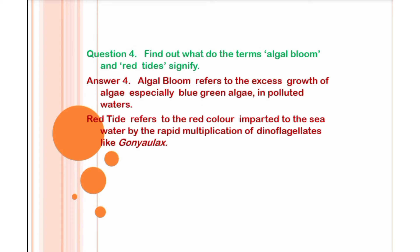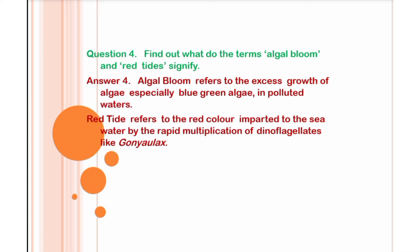Next question: what do the terms algal bloom and red tide signify? Algal bloom refers to the excess growth of algae, especially blue-green algae, in polluted waters. Red tide refers to the red color imparted to seawater by the rapid multiplication of dinoflagellates — a protist from kingdom Protista. When their multiplication is rapid in seawater, we call it red tide. An example is Gonyaulax.